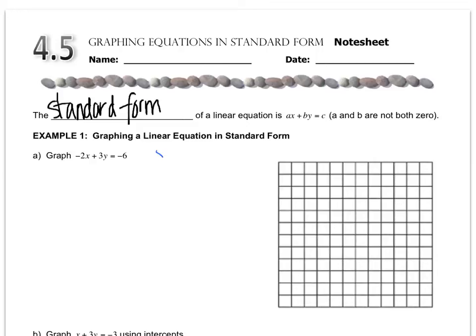Remember that when you do the X intercept, it looks like this. It has a number and a zero in the Y value. When you have the Y intercept, it has a zero in the X value. So let's use that information to help us calculate.